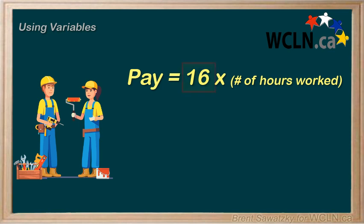Your pay rate is a constant — it doesn't change. The 16 stays 16 no matter what the day. But your number of hours is variable, meaning not constant; it can vary. Some days your number of hours might be 3, while other days it could be 6. It varies. Thus, in our equation, the number of hours worked is your variable.